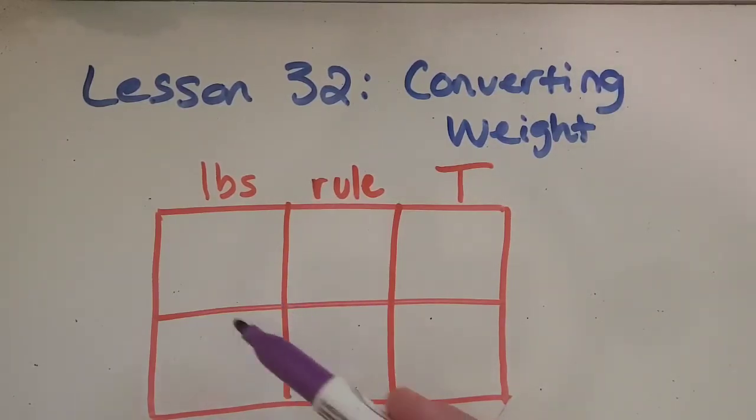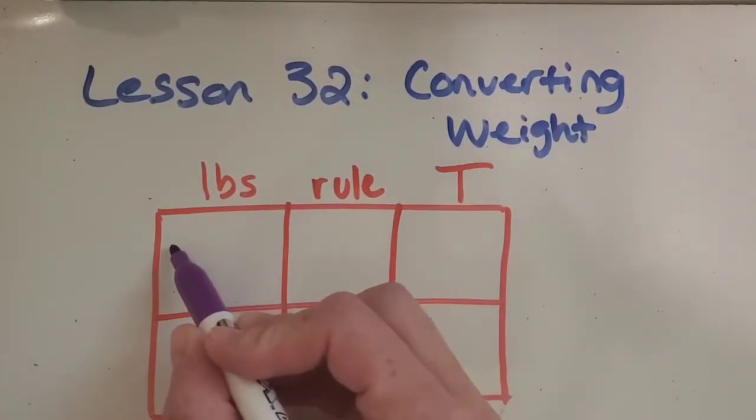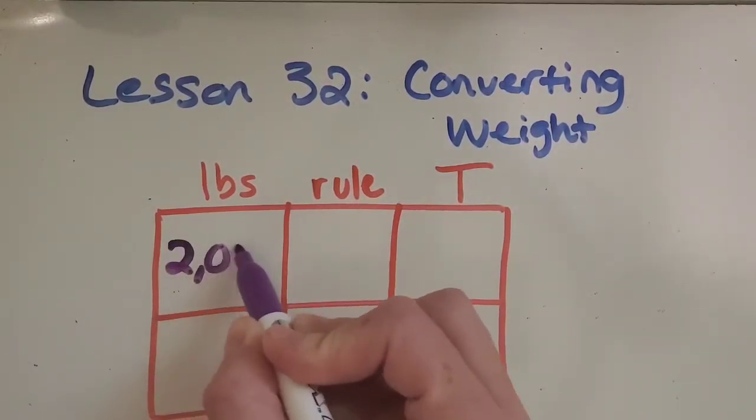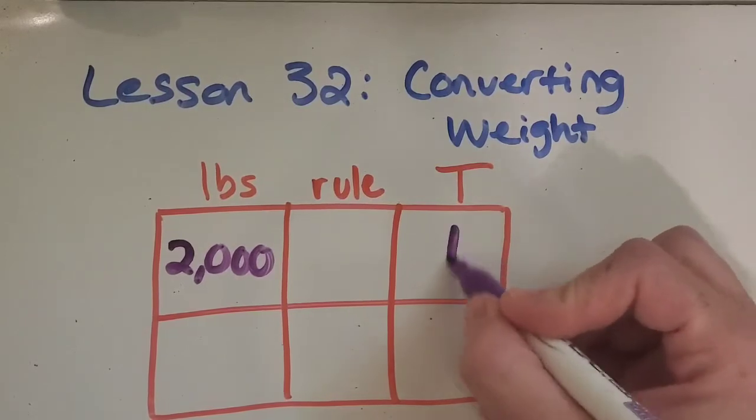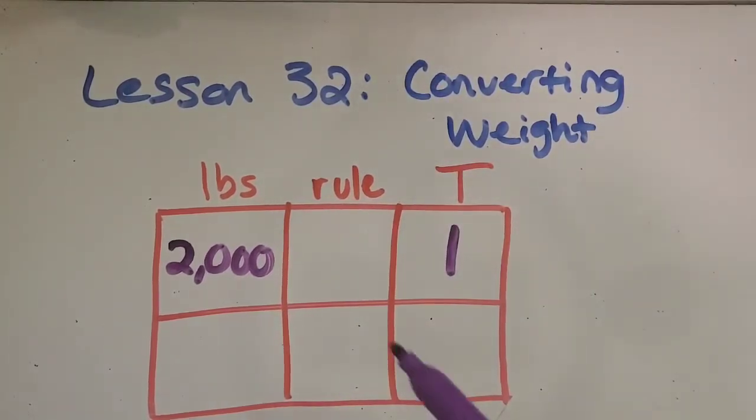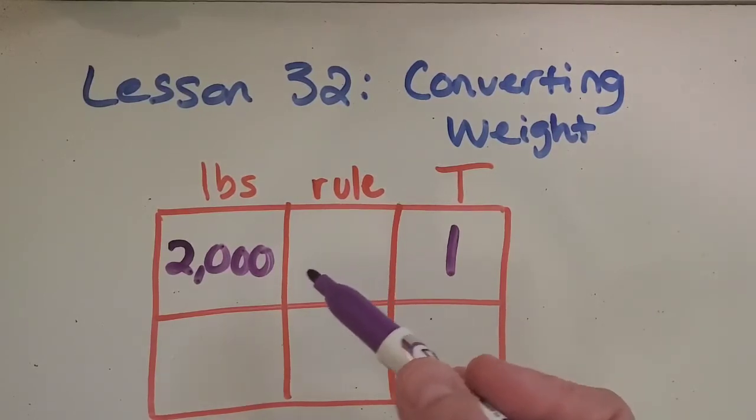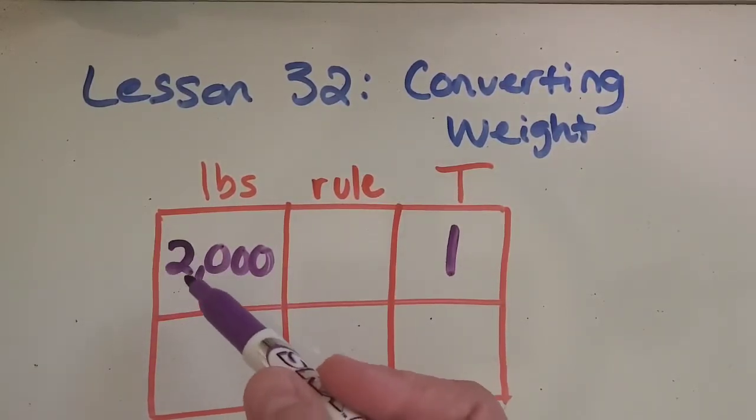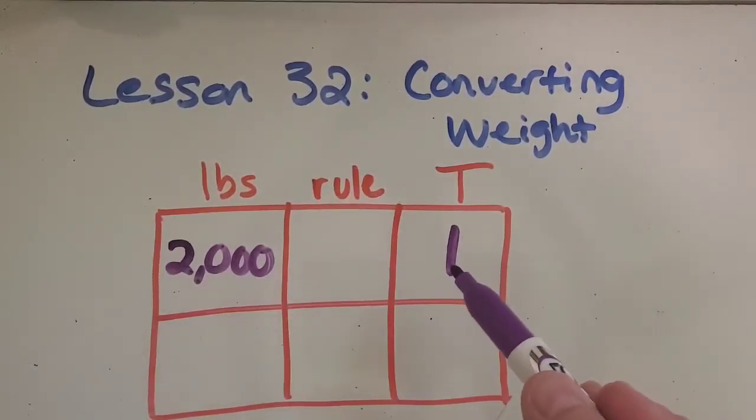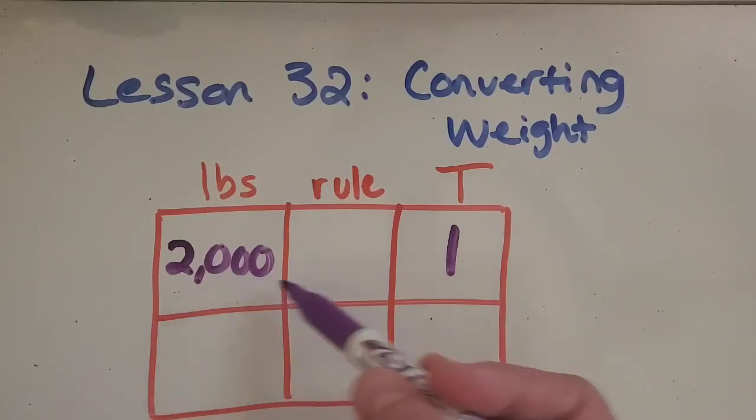If you search up how many pounds are in a ton you see that there are 2,000 pounds in one ton. So then you just got to think about what is happening. What rule or pattern is happening to go from 2,000 down to one. The other two problems we did we were going from one to a bigger number. So think about the opposite.